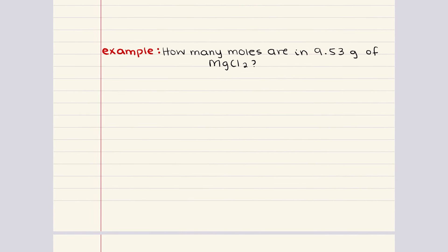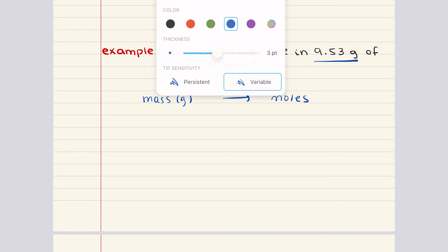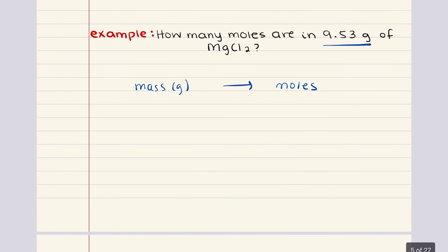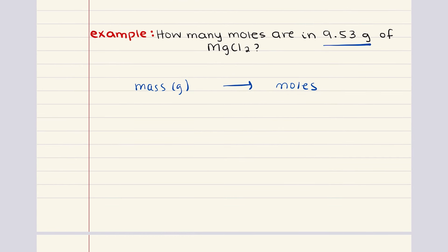The second example asks: how many moles are in 9.53 grams of magnesium chloride? We're given mass in grams and asked to convert to moles, so we divide by molar mass. Note that AMU is numerically equivalent to grams per mole — for any element, its atomic mass in AMU equals the weight of one mole in grams. For example, one water molecule H2O weighs approximately 18 AMU, and one mole of water weighs approximately 18 grams.